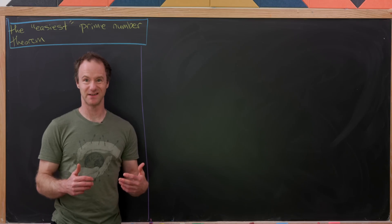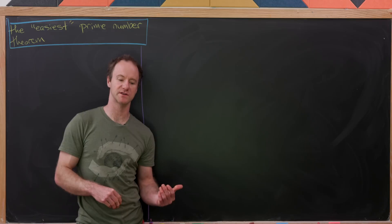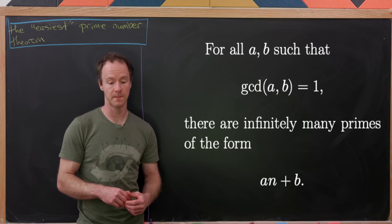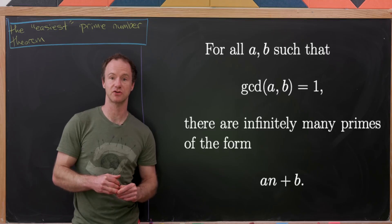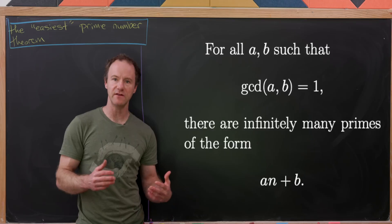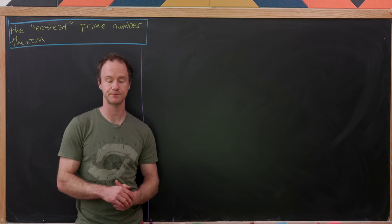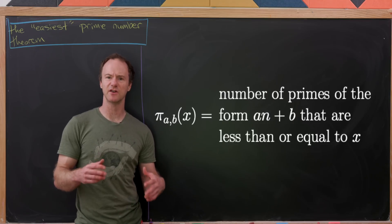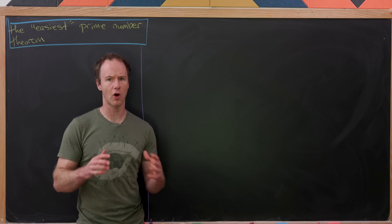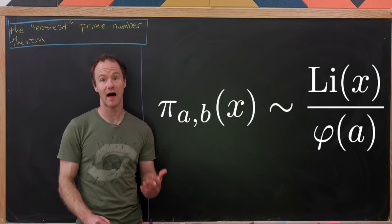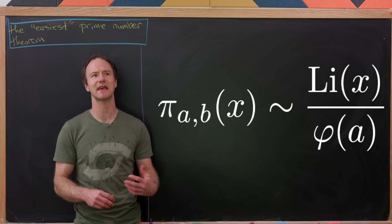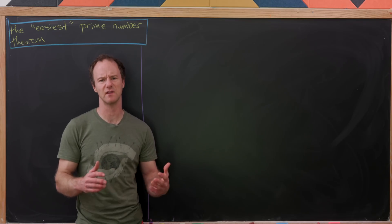Next, I'd like to talk about a generalization, which requires Dirichlet's theorem — we've proven special cases on the channel before. It says that if you have relatively prime natural numbers a and b, then there are infinitely many primes of the form an + b. If we define π_{a,b}(x) to be all primes of the form an + b that are less than or equal to x, then π_{a,b}(x) grows at the same rate as li(x) over φ(x), where φ is Euler's totient function, which counts numbers relatively prime to a that are at most a.